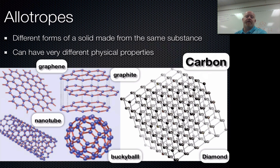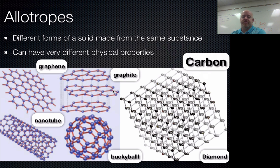One interesting thing about solids is that they form different structures. When you build a solid, you can actually have different structures within the same element. For example, this is carbon — carbon comes in lots of different forms that can build these different structures. We call these different forms allotropes. Because of the different locking arrangement within the solids, these different allotropes actually form different physical properties — different melting points, different hardness, different electrical current conduction. Here are some different ones that carbon forms: the classic diamond, and graphite, which is the stuff in your pencil lead.